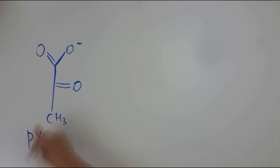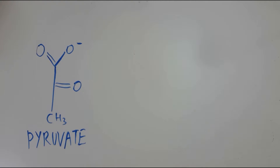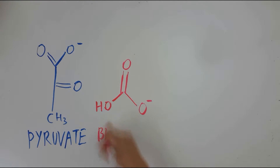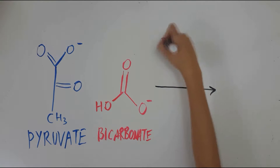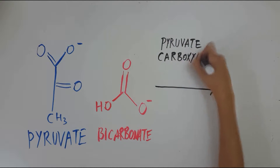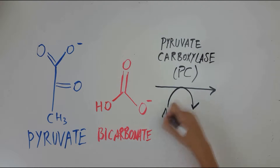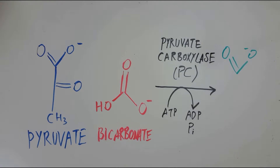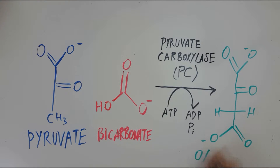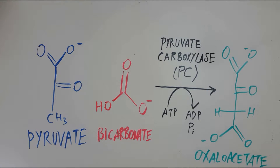Pyruvate carboxylase catalyzes the ATP-dependent carboxylation of pyruvate, synthesizing oxaloacetate in the process. Pyruvate carboxylase and the formation of oxaloacetate is crucial in anaplerosis, the tricarboxylic acid cycle, and in gluconeogenesis.